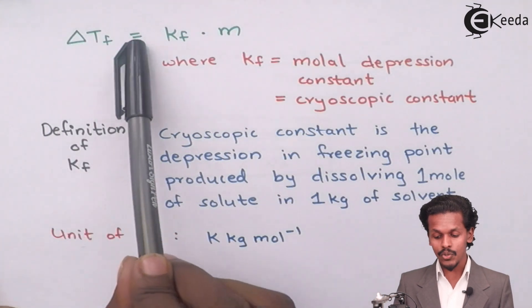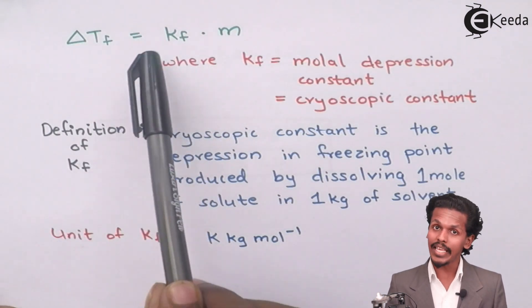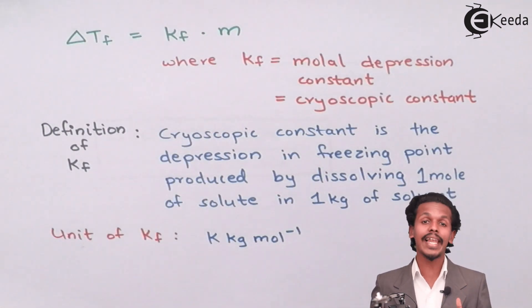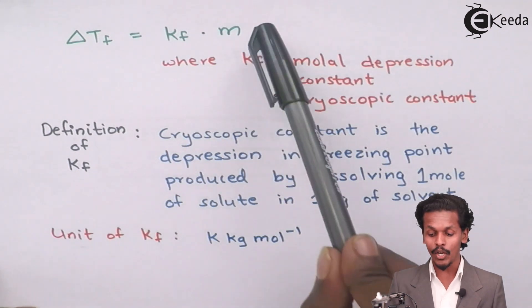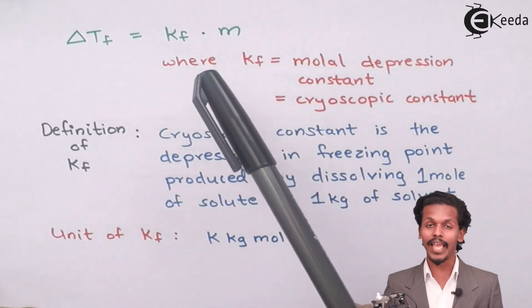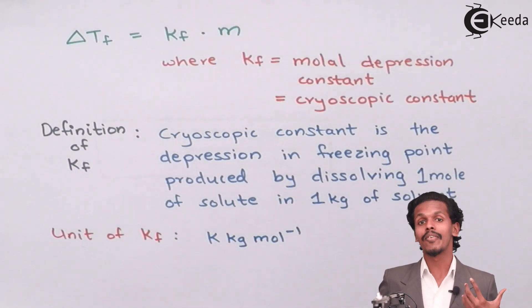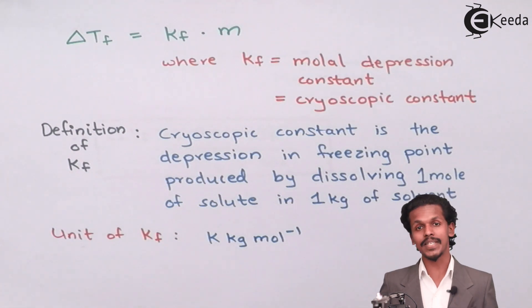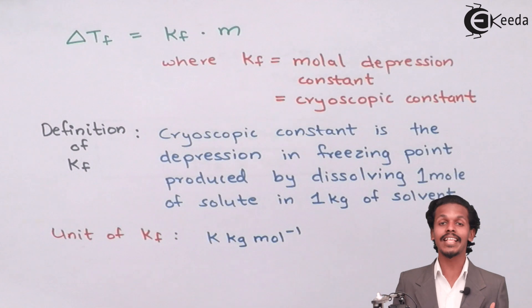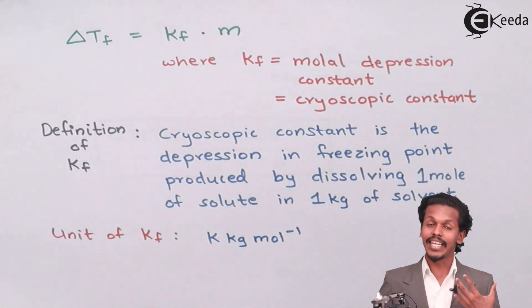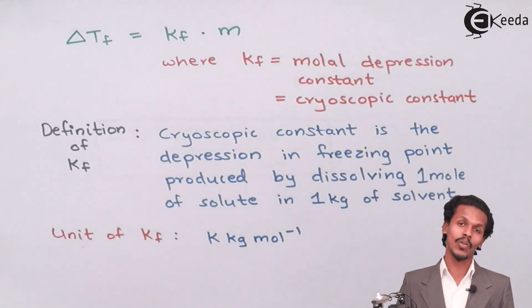See, delta Tf is equals to Kf. It will be only when the molality of the solution is one. Means when the value of m, small m, is one. And the small m will be only one or will have a unit value when one mole of a substance is dissolved in one kg of this solvent. And hence, this is now the definition of cryoscopic constant.